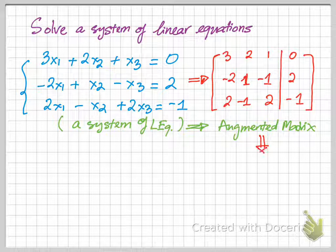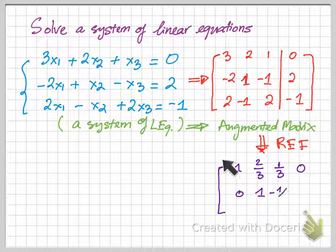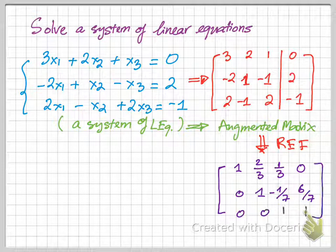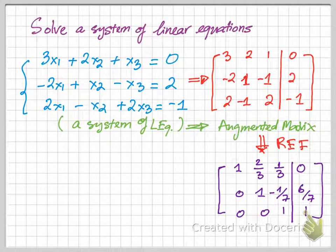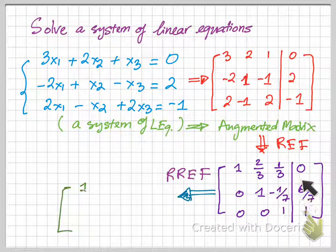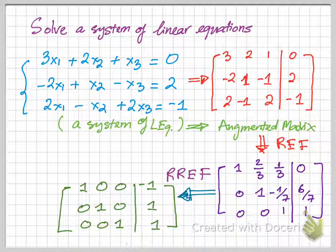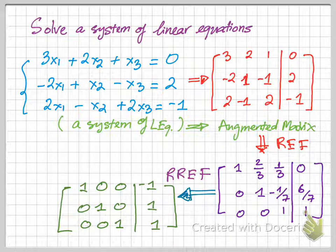The first step is you want to transform the augmented matrix into its row echelon form. Once you have it in row echelon form, we can transform the row echelon form into its reduced row echelon form.